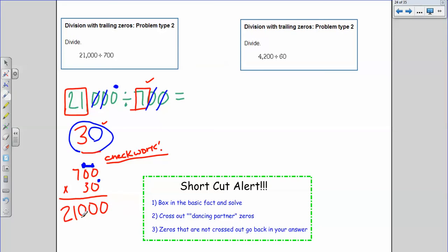What was the dividend that we started out with? You got it. 21,000. That means 30 has to be the correct answer. All right. Let's do this again.